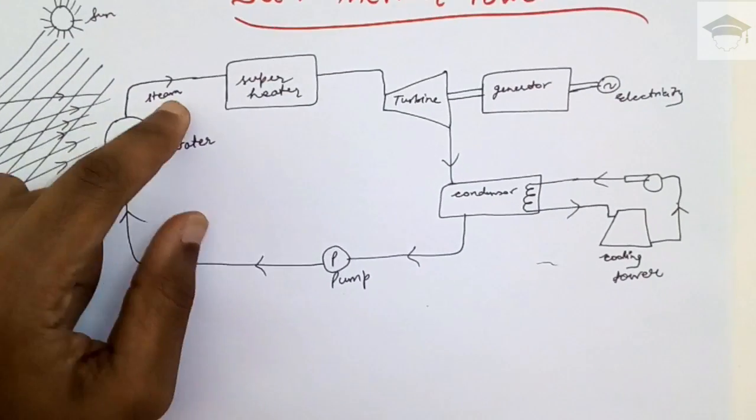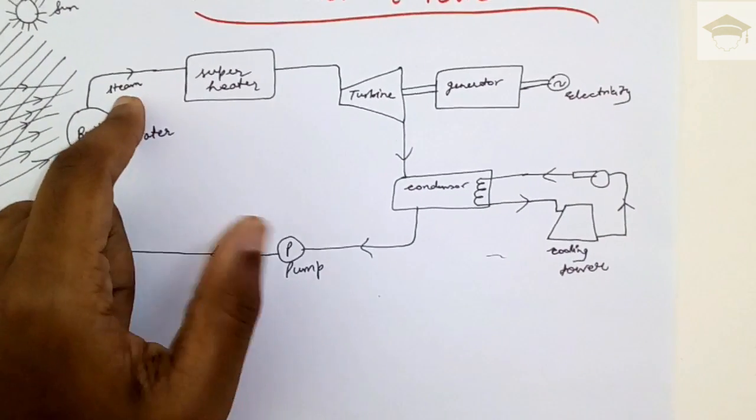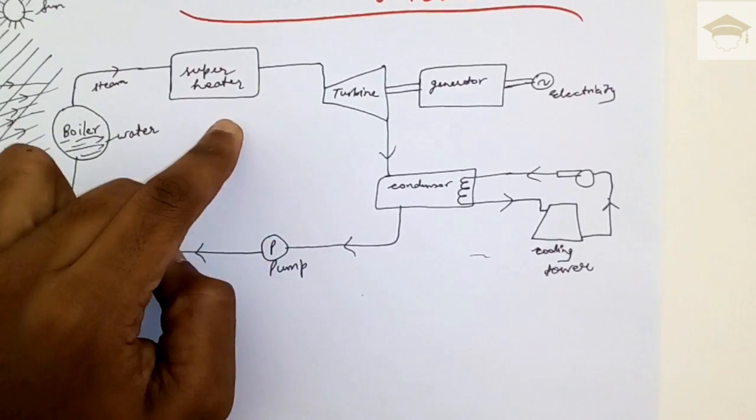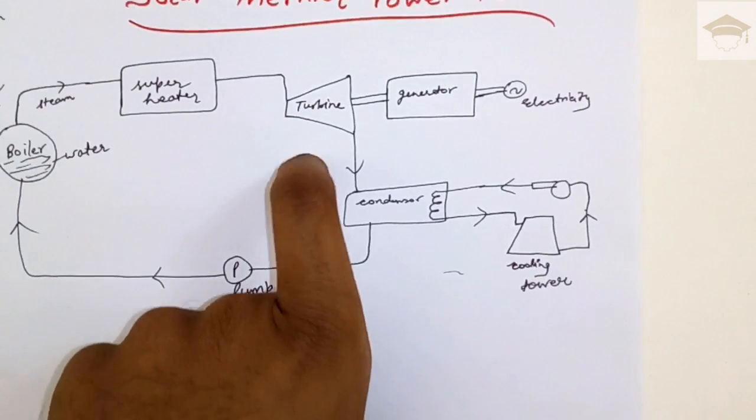In the superheater, the steam is converted into superheated state. Then it is made to pass through the turbine. In the turbine, the turbine rotates and the generator which is coupled to the turbine.